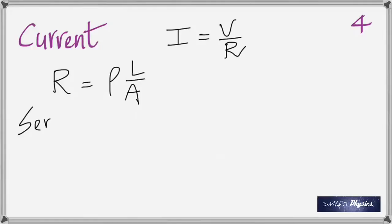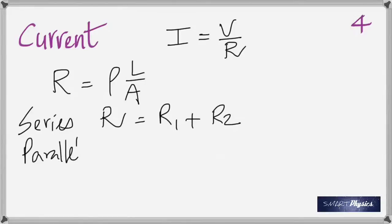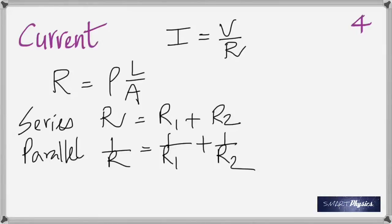When connecting resistors, the formulas are opposite to those for capacitors — don't mix them up. In series, resistance just adds up. In parallel, 1/R = 1/R1 + 1/R2. When in series, the current is the same throughout. When in parallel, the voltage is the same across each branch.